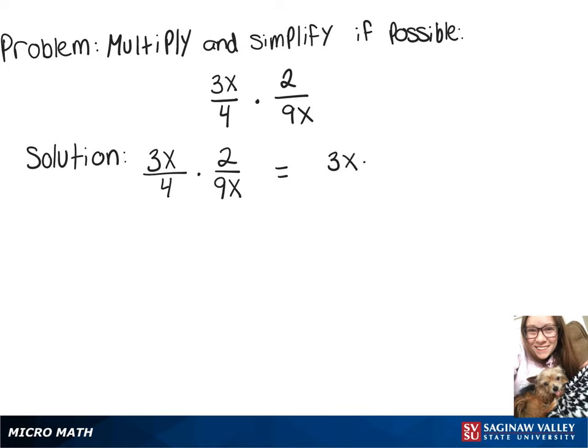So to do that, we need to multiply across the top, giving us 3x times 2, and then multiply across the bottom, giving us 4 times 9x.